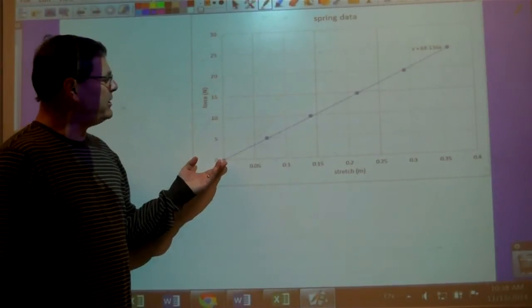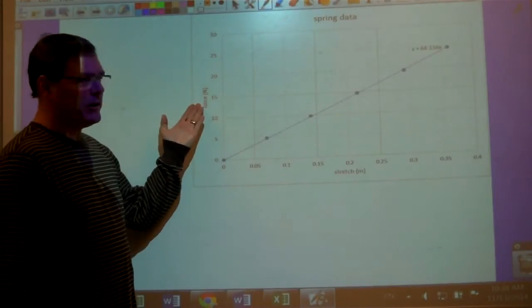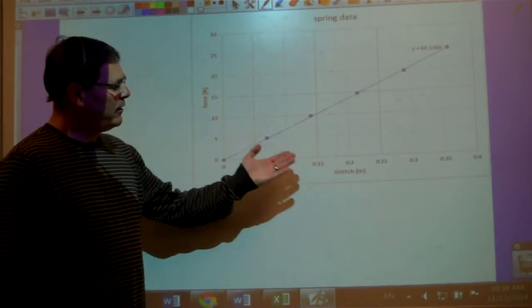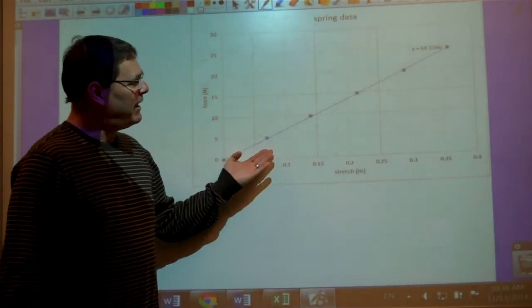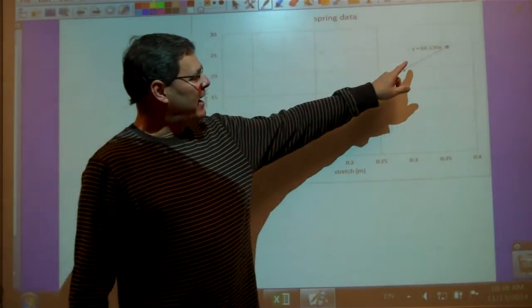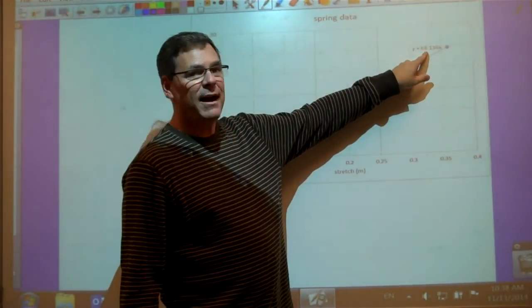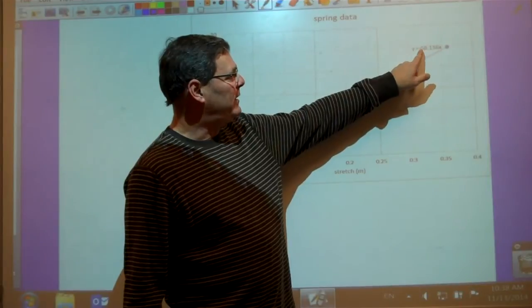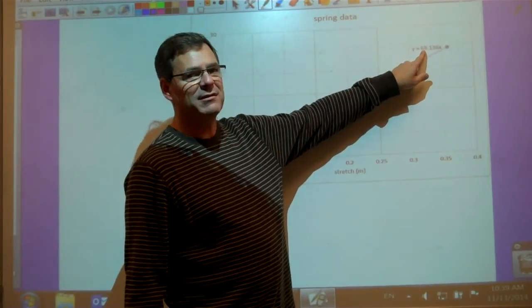So here's the linear relationship of the force on the spring versus the amount of stretch. And this is a straight line. And I've asked Excel to calculate the slope of the line for me. And I see here that the slope is 68.